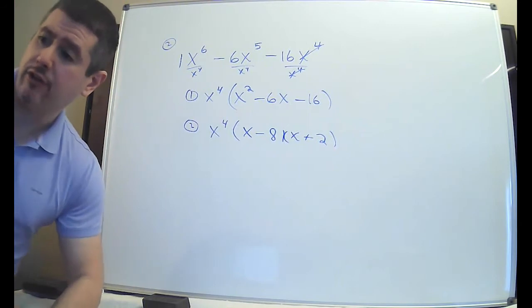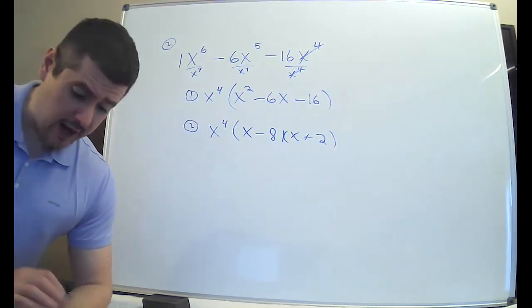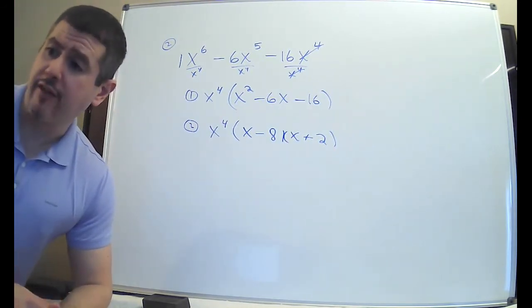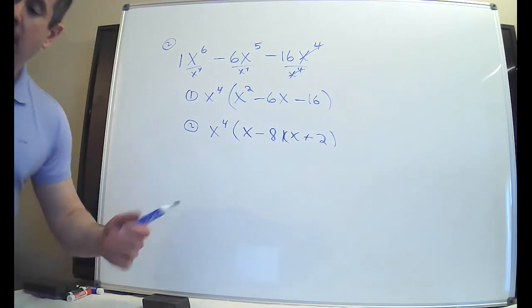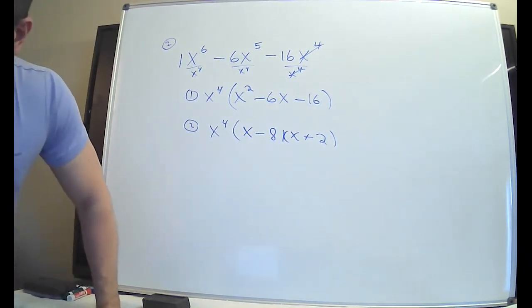This time, GCF was letters only. The first example that I worked, the GCF was a number. It was 5. Here, it's just a letter. The next one, the GCF is going to be a combination of the two.